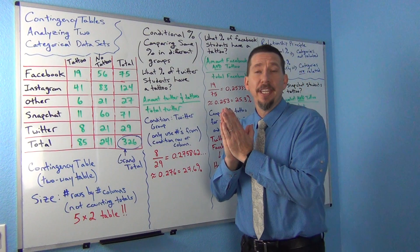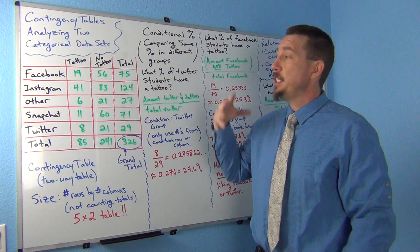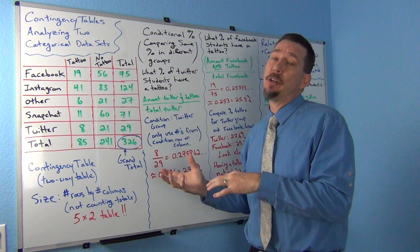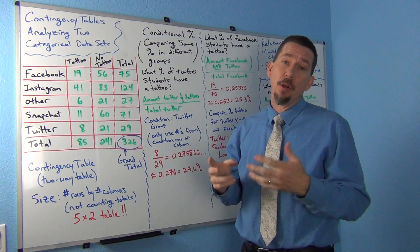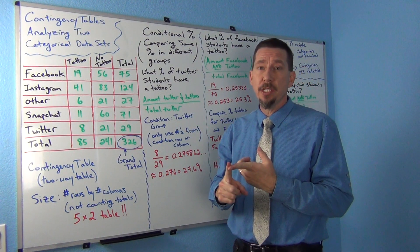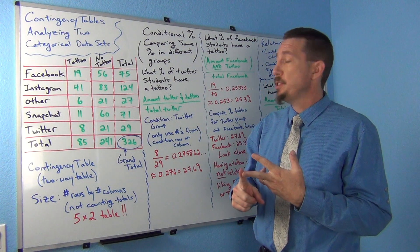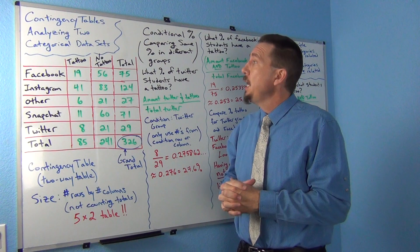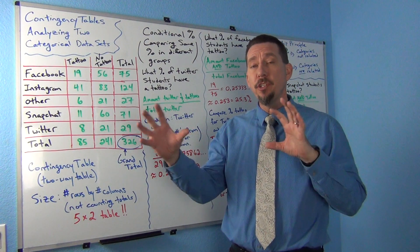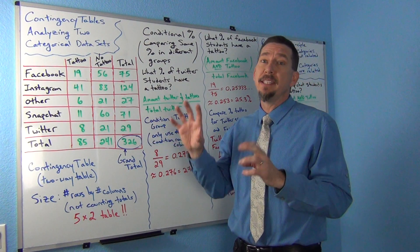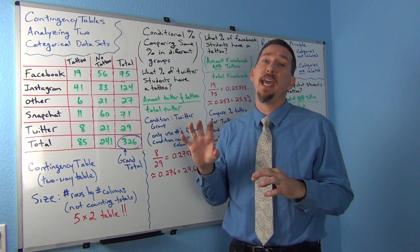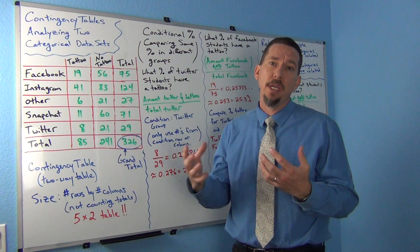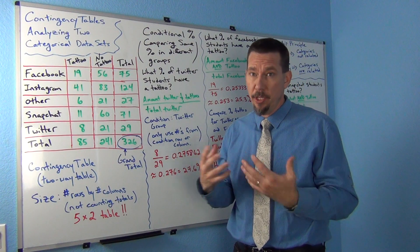Hi everyone, this is Matt Tuchot again from IntroStats and we're continuing our discussion about how to analyze two categorical data sets. So far we've looked at marginal percentages and joint percentages and now we're going to get into something called conditional percentages. If you're really trying to determine if two categorical data sets are related or not, it's these conditional percentages that are the most important.